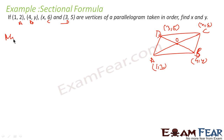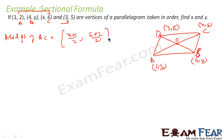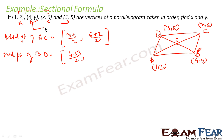So we find the midpoint of AC: the x-coordinate is (x + 1)/2 and the y-coordinate is (6 + 2)/2. Similarly, the midpoint of BD: the x-coordinate is (4 + 3)/2 and the y-coordinate is (y + 5)/2. Both midpoints are equal to O, so both these points are equal.